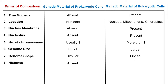Histones are absent in prokaryotic cells. Histones are a type of highly basic protein, also known as DNA-binding proteins. They are absent in prokaryotic genetic material but present in eukaryotic genetic material.